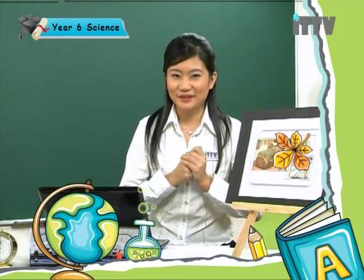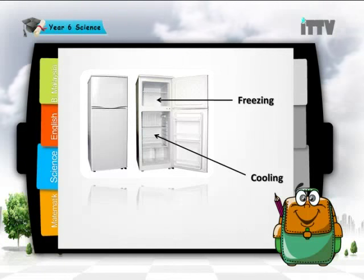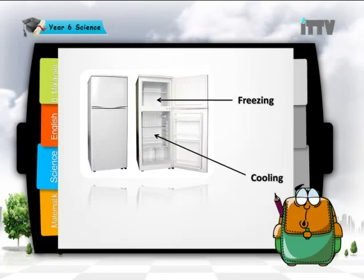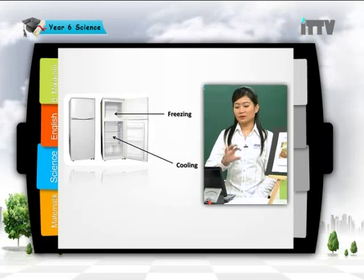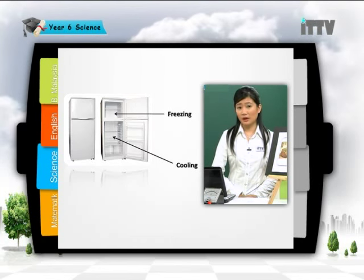Now it's freezing and cooling time. The refrigerator has two parts: the top part is for freezing and the bottom part is for cooling. Some fridges have the lower part for freezing and the upper part for cooling, so you will have to identify them yourself.